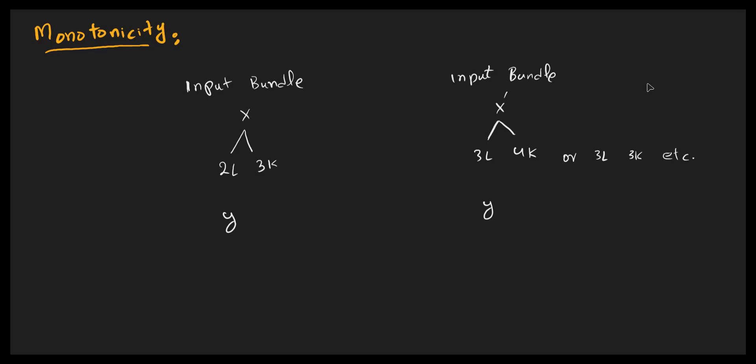In this video lecture we are going to discuss the concept of monotonicity. To understand monotonicity, let us take an example. Suppose we are assuming two factor input bundles: the first one is x and the other one is x prime. What is important to note is that x prime is greater than x, meaning it shows a higher level of factor inputs — either both factor inputs are greater, or one of them is greater.